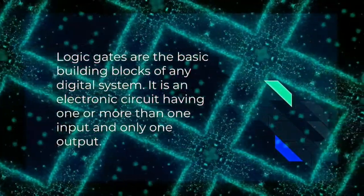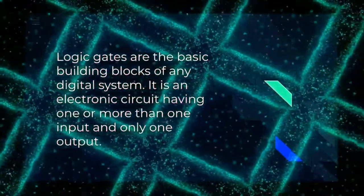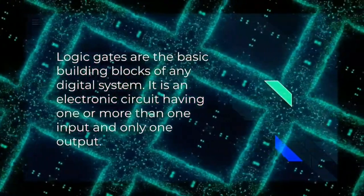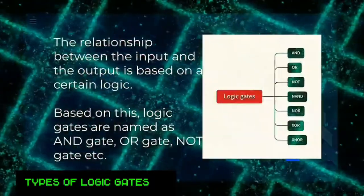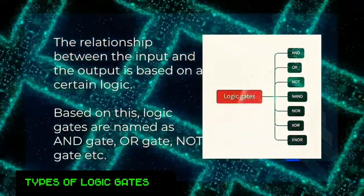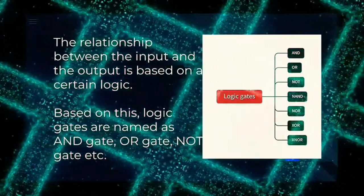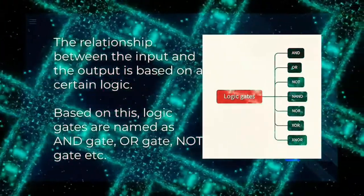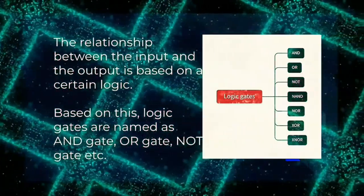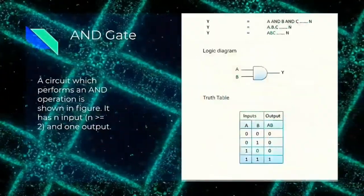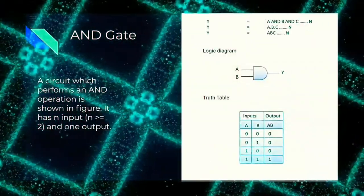Logic gates are the basic building blocks of any digital system. A logic gate is an electronic circuit having one or more inputs and only one output. The relationship between the input and the output is based on a certain logic, and based on this logic, gates are named as AND gate, OR gate, NOT gate, etc.